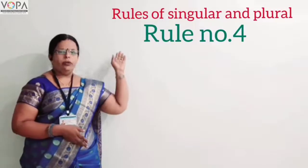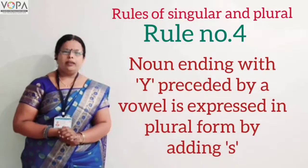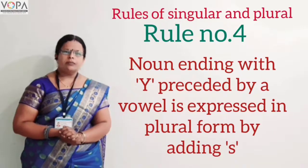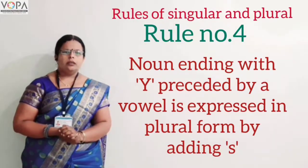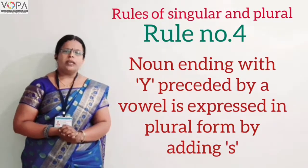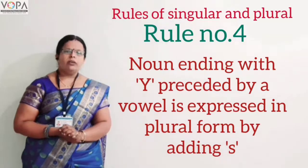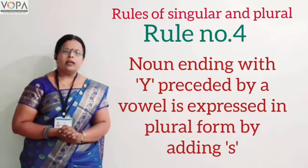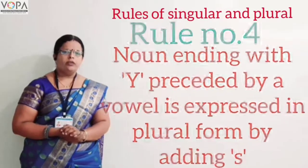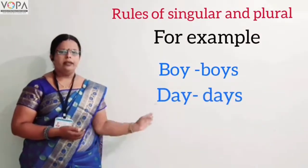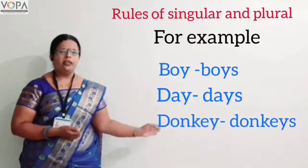Rule number four. A noun ending with 'y' preceded by a vowel forms its plural by adding 's'. For example: boy → boys, day → days, donkey → donkeys.